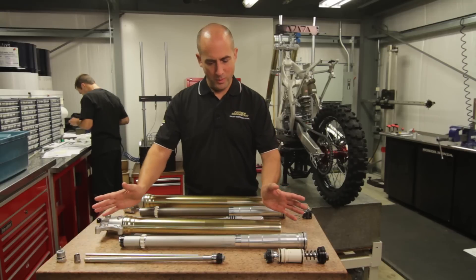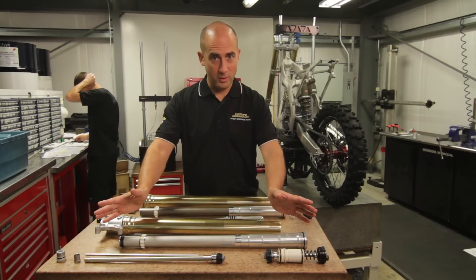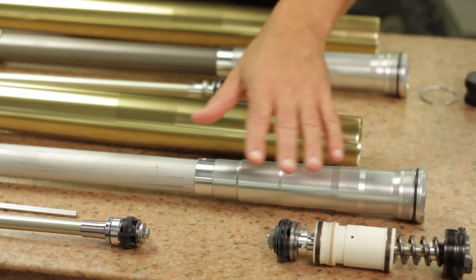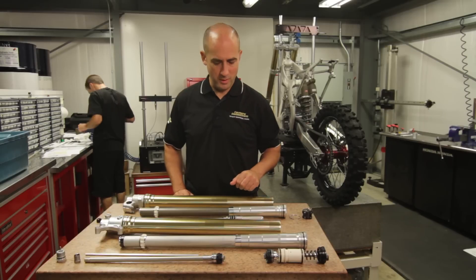So the SFF function, we have one fork doing all of the hydraulic work and the damping. This is where your revalve happens, we're changing shims, we have pistons, damper rods, everything similar to the forks we've been using for years.